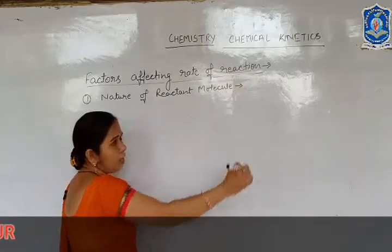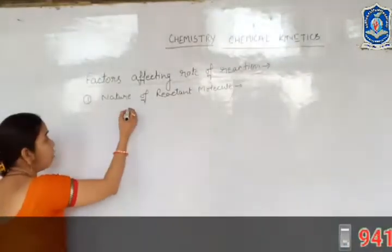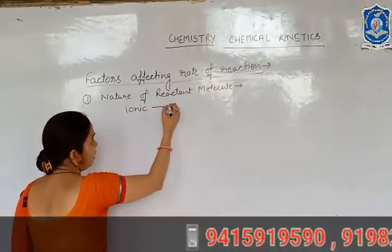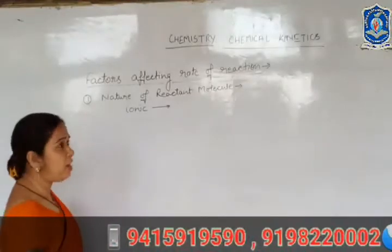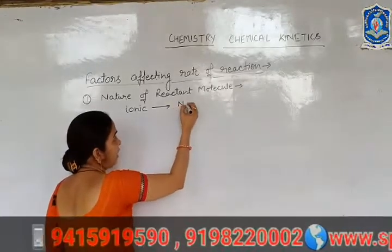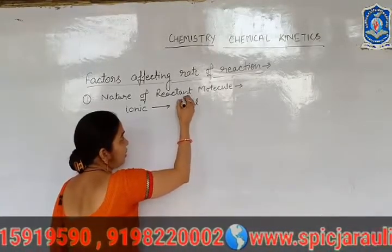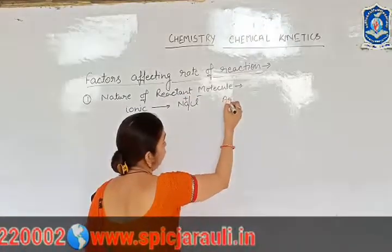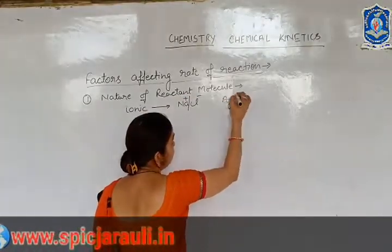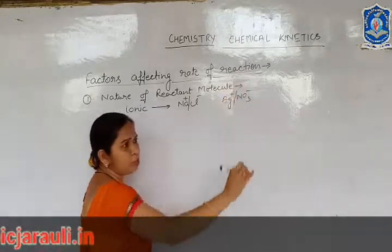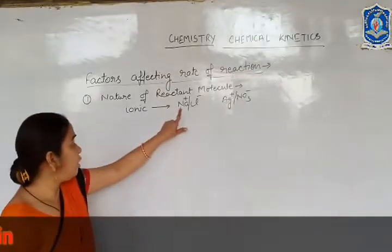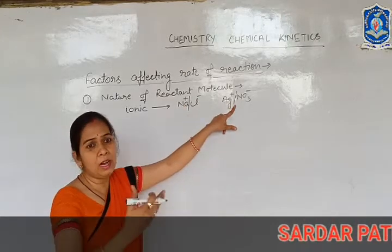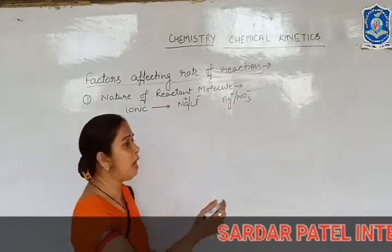If the reactant molecule is ionic in nature, like NaCl which can dissociate into Na+ and Cl-, then they react rapidly and the rate of reaction becomes high.